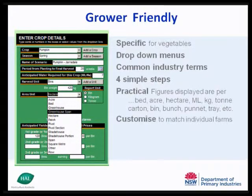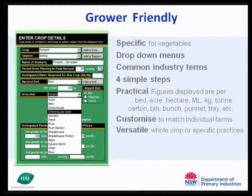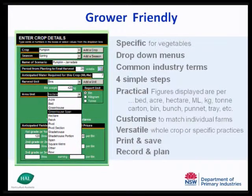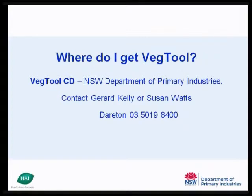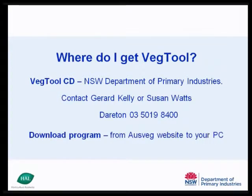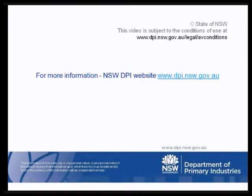VegTool can be customised to match individual farms and practices. It's versatile — you can investigate a whole crop or specific practices, and you can print, save, and use it to record and plan. VegTool is available as a CD from the NSW Department of Primary Industries — contact the department office — or it can be downloaded from the AusVeg website to your PC. More information about VegTool and vegetable gross margins is available at the NSW DPI website.